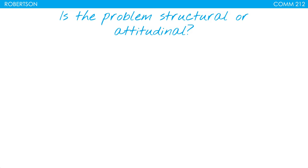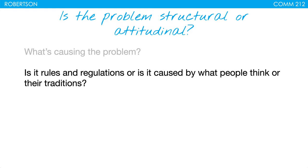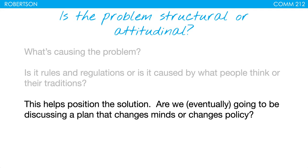Is the problem structural or attitudinal? What's causing the problem? We've established that it exists and made your audience care — now, why is it happening? Is it rules or regulations, or is it caused by what people think or their traditions? This helps position a solution. This is also referred to as "inherency" — structural inherency or attitudinal inherency. It's really about what's causing the problem: is it attitudes of people, or structures like laws and systems that need to be changed?